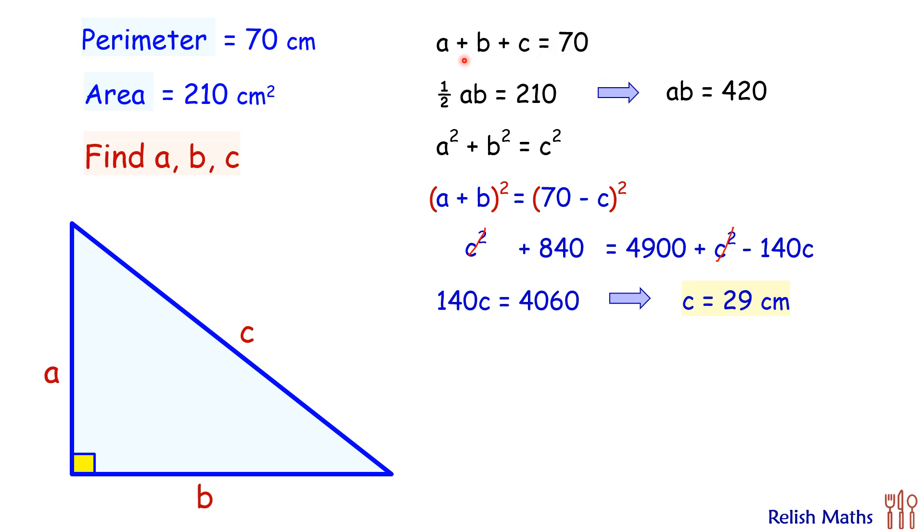Now putting this value of 29 here in the first equation, we'll get this first equation as a plus b equals 41. And let's copy this equation, ab equals 420, down below. If we'll see here, this a plus b is like sum of the roots, ab is product of the roots.